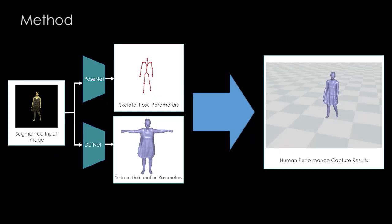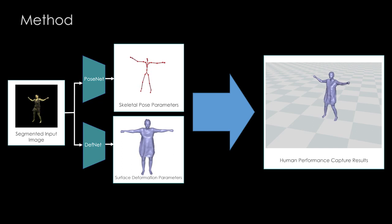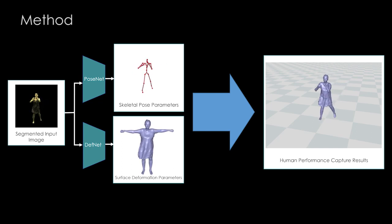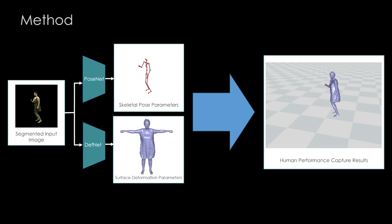Our method takes monocular segmented video frames as input, and jointly predicts the skeletal pose and the dense surface deformation of the entire human body without the need for any 3D ground truth supervision.